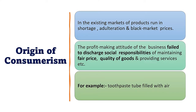The origin of consumerism arose from existing markets running on shortage, adulteration, or black-market pricing, happening since the industrial revolution. The industrial revolution played a major role in the spread of consumerism. The profit-making attitude of businesses failed to discharge social responsibilities for maintaining fair prices and quality — for example, toothpaste filled with air. In the beginning of the 17th century in England, the concept of consumerism spread to many other countries.